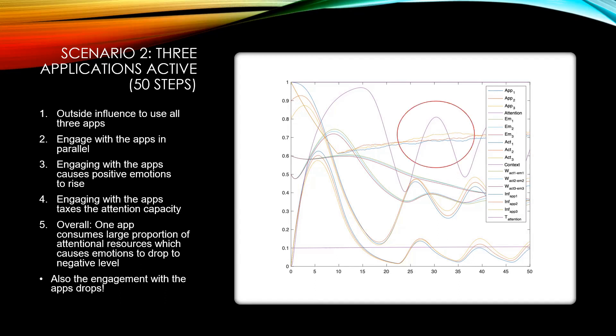But what we see in this three-app case is that the attentional demand is much higher, which leads to lowering of the emotion below the neutral. We can see that the trend here is that the emotion turns to negative because of the overloading of the attentional resources. Also, compared to the one-app case, the user uses the apps less.